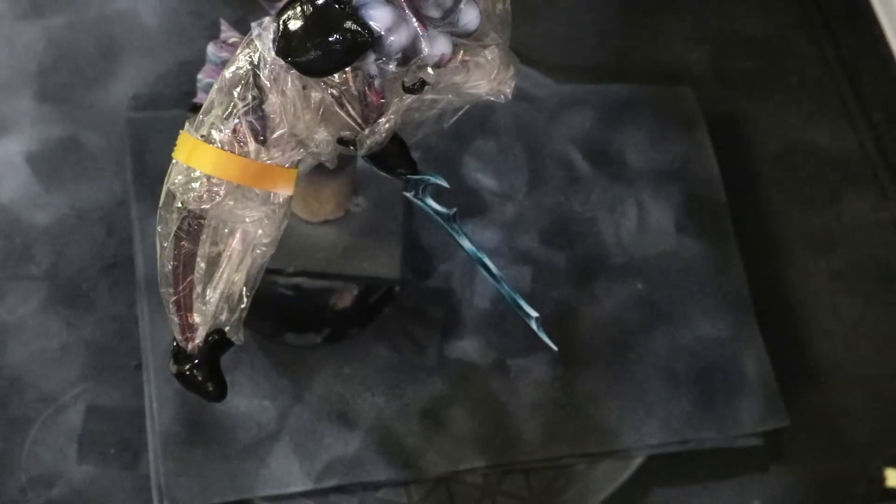Hello everybody and welcome to another hobby cheating video. Today we're going to talk about smoothing blends with your airbrush. So here I have a nice little magical sword on my keeper of secrets and we're going to go ahead and smooth it all out with our airbrush.